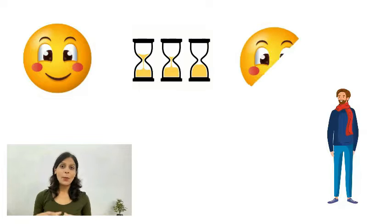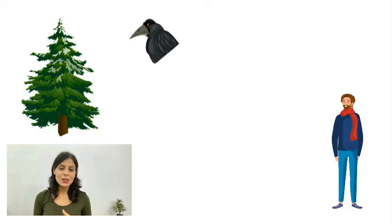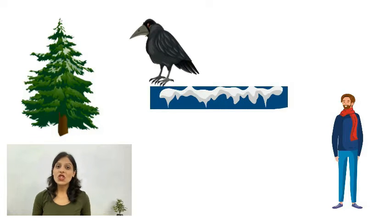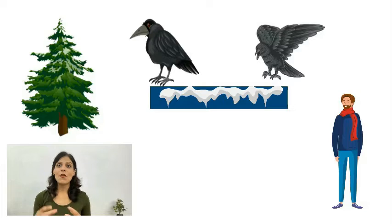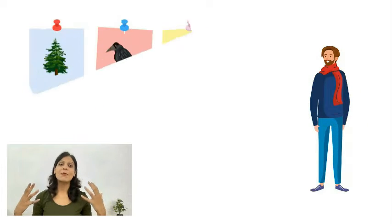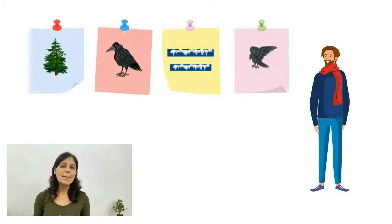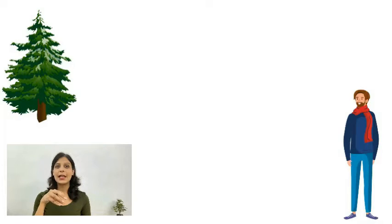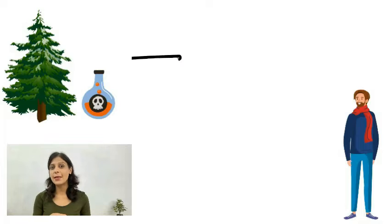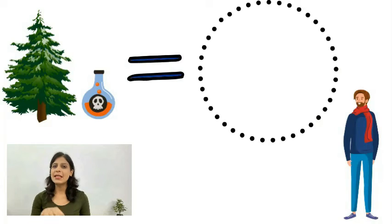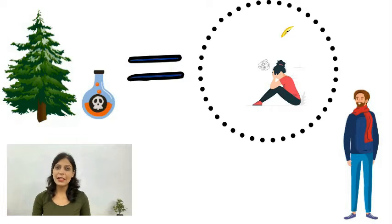But the poet Robert Frost has used the hemlock tree, the crow, the dust of snow, and the crow's shaking off the dust from his body as symbols only. The hemlock tree, a poisonous tree, has been used here as a symbol of the poet's sad state of mind. That's no less than a poison for the body.